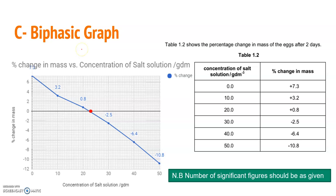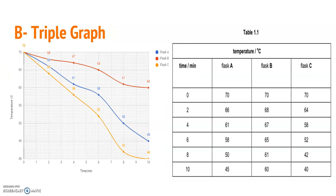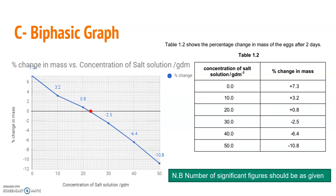After that, we took the triple graph, which is a graph involving a set of data over a graph area. The third thing we talk about today is the biphasic graph. The biphasic graph is an experiment which we took in the chapter of osmosis — using potatoes,